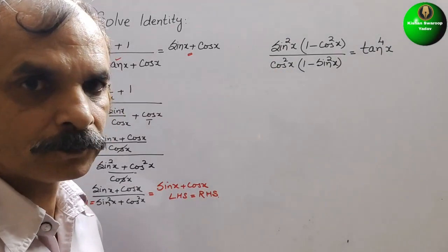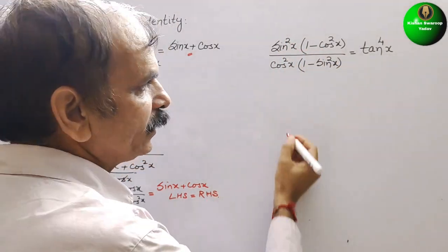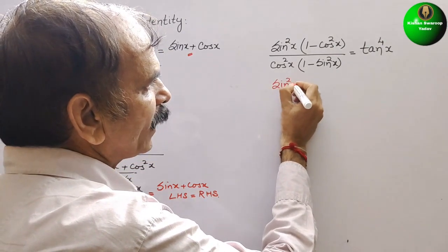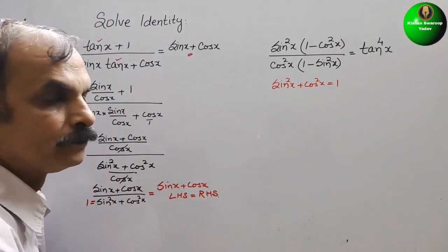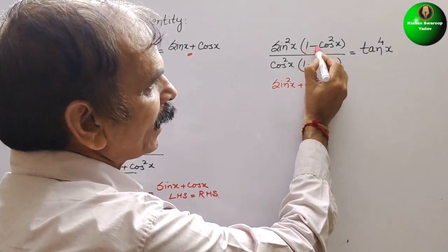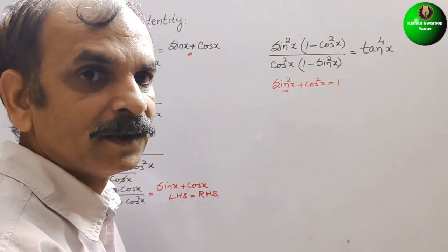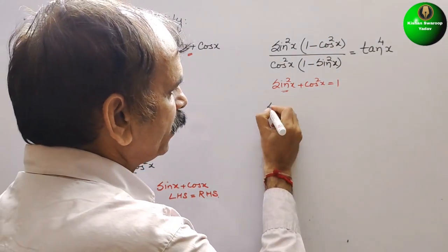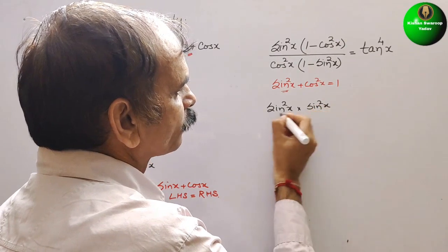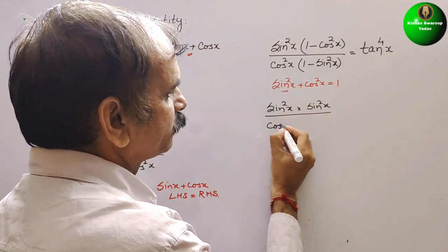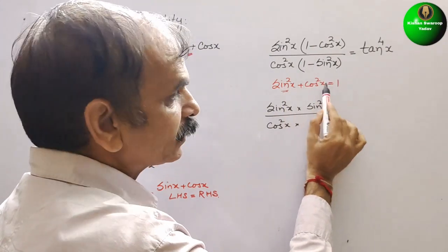Now comes your second question. Here if you see sin square x in bracket 1 minus cos square x — there is one identity: sin square x plus cos square x is equal to 1. So 1 minus cos square x is sin square x. So here it will be sin square x times sin square x, and here cos square x into 1 minus sin square x. Now 1 minus sin square x is cos square x.